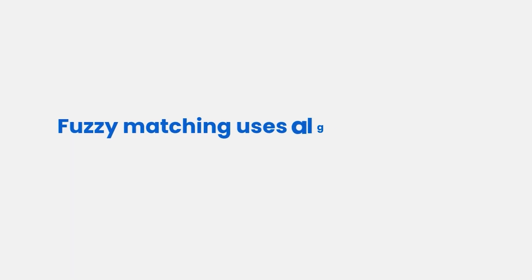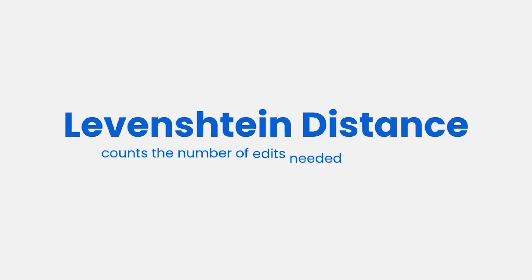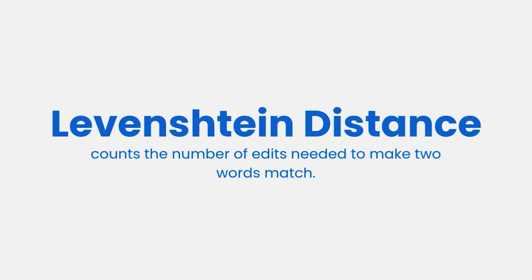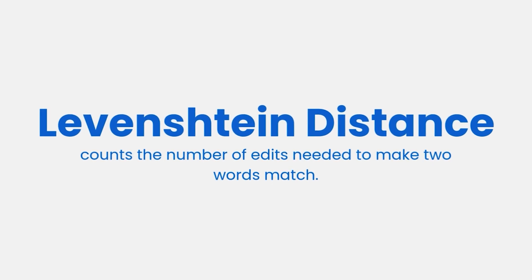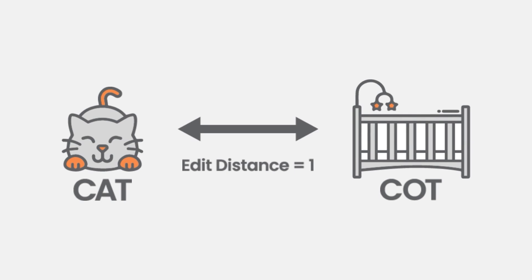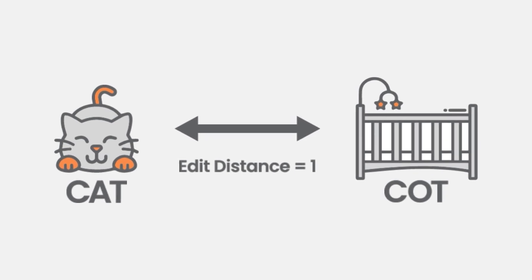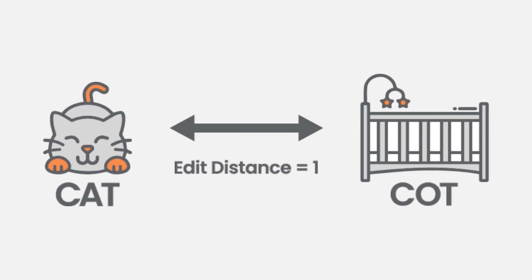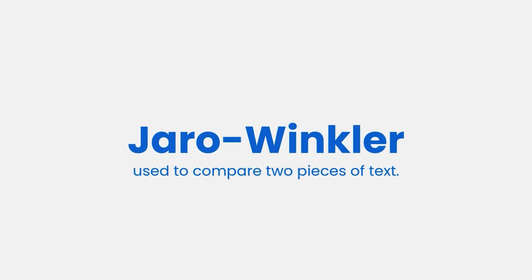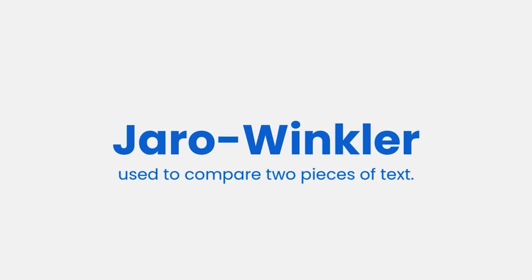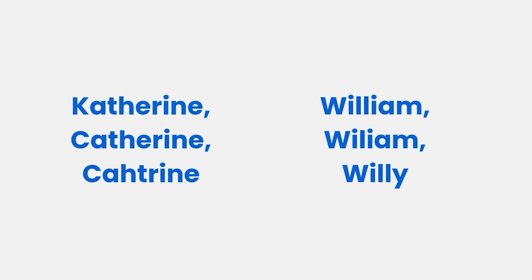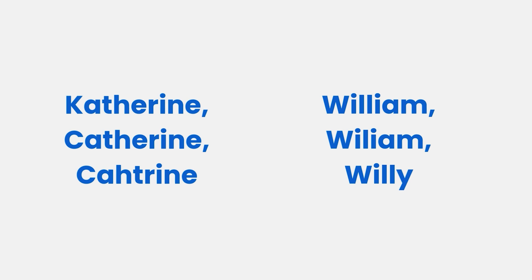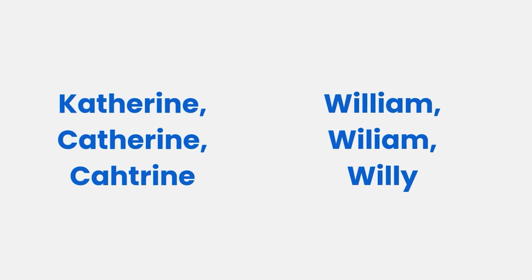Let's find out how fuzzy match works and what algorithms power this technology. Fuzzy matching uses algorithms like Levenshtein distance, which counts the number of edits needed to make two words match. For example, the difference between 'cat' and 'cot' is just one edit, which means it could be flagged as a potential duplicate.